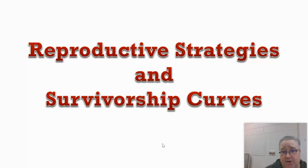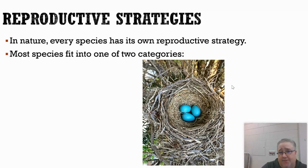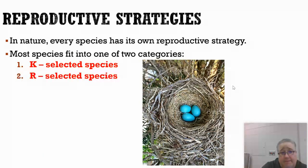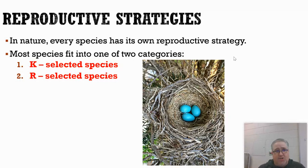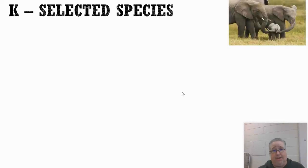Now let's talk about reproductive strategies. This is one of the more interesting topics. It deals with how different species approach reproduction. Every species is kind of unique, but just about every species falls into one of two different categories: K-selected species or R-selected species.